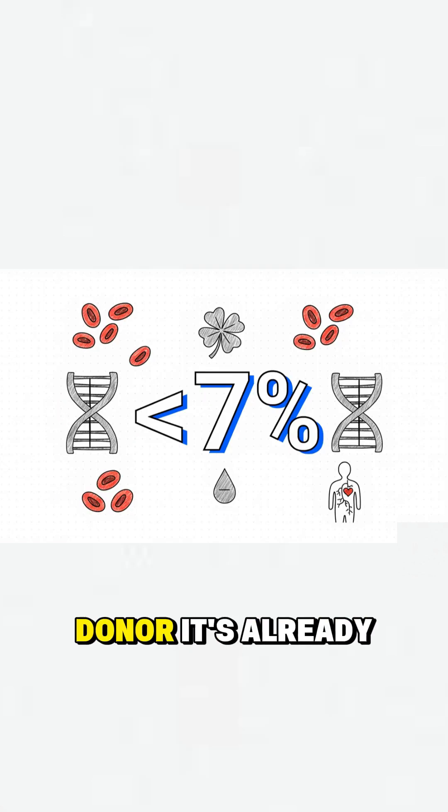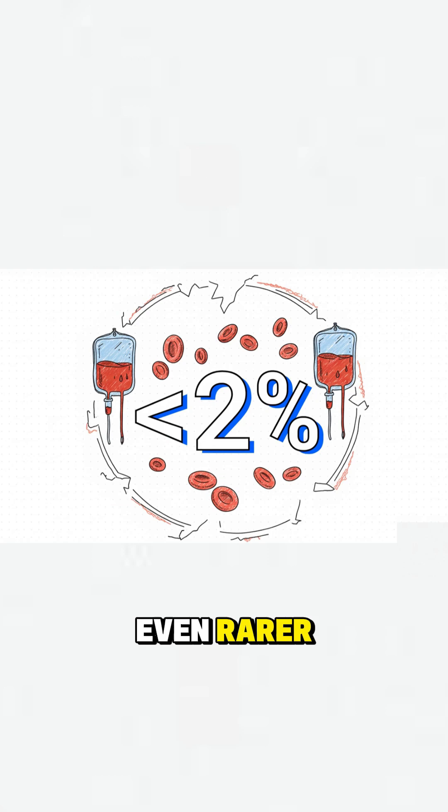So, that universal donor, it's already pretty rare, found in less than 7% of us. A negative is even rarer. Their safety net for getting blood gets really small.